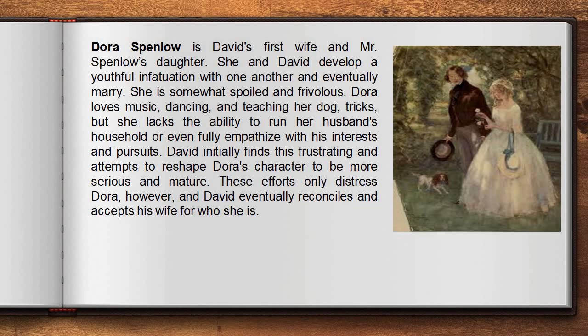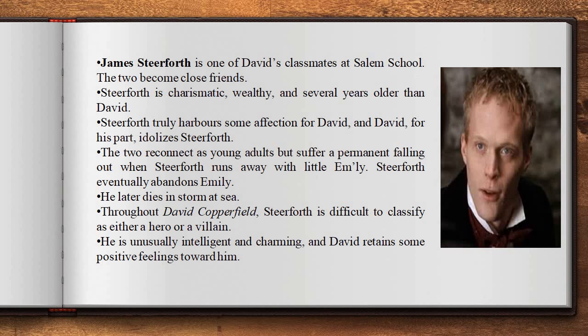Dora Spenlow is David's first wife and Mr. Spenlow's daughter. She and David develop a youthful infatuation with one another and eventually marry. She is somewhat spoilt and frivolous — Dora loves music, dancing, and teaching her dog tricks — but she lacks the ability to run her husband's household or fully empathize with his interests and pursuits. David initially finds this frustrating and attempts to reshape Dora's character to be more serious and mature. These efforts only distress Dora, however, and David eventually reconciles himself and accepts his wife for who she is.